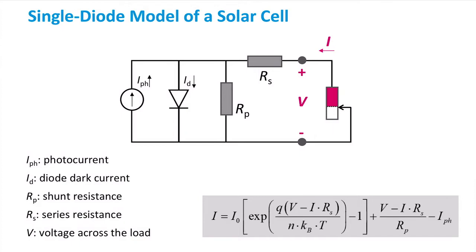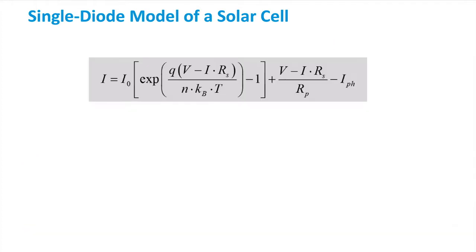I won't go into the full derivation, but you can find it in chapter 9 of the textbook. But let's take a closer look at this equation. Here you can see the equation for the single diode model. I0 is the dark saturation current. There will be a whole video on the importance of this parameter in the future.